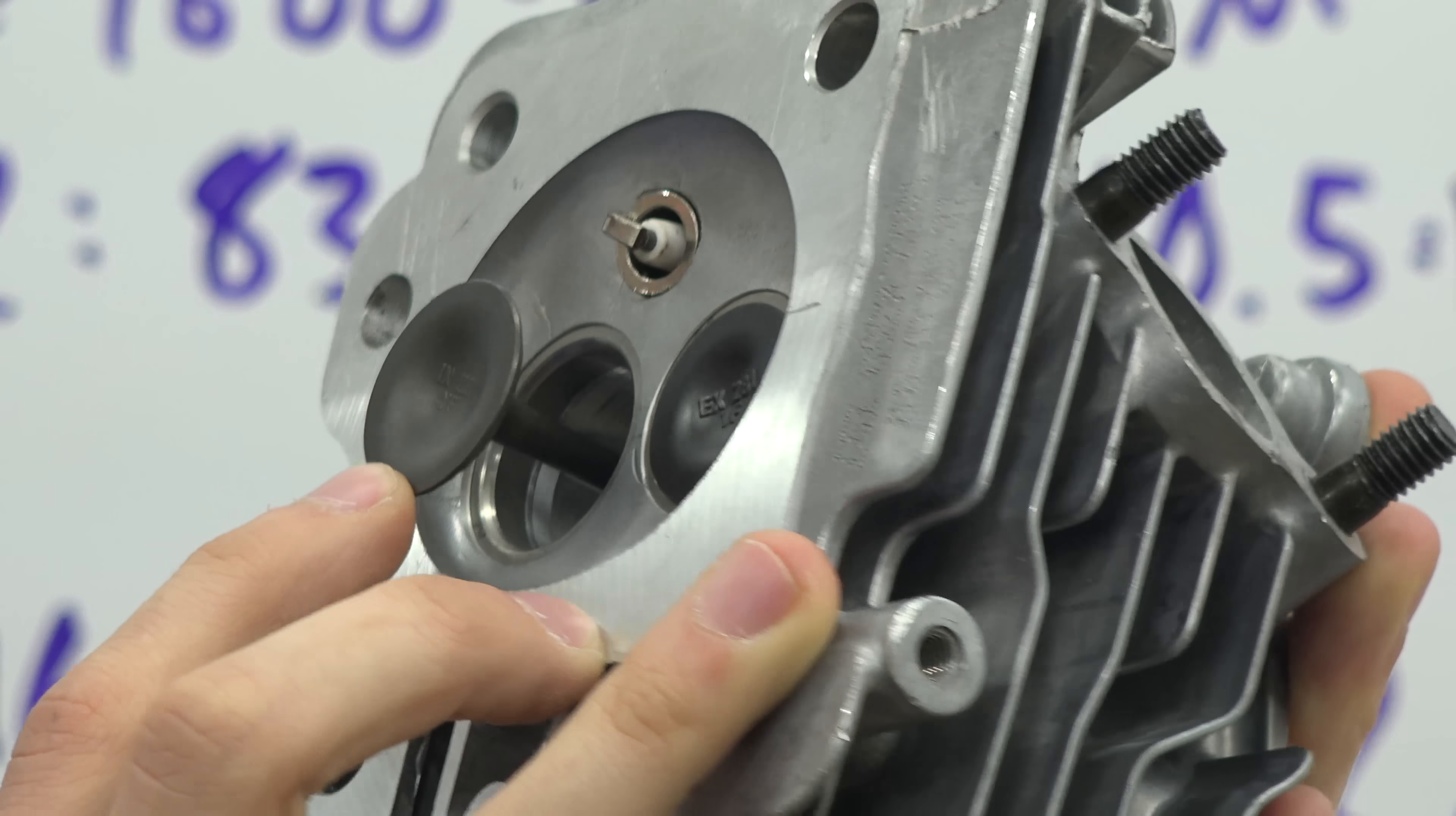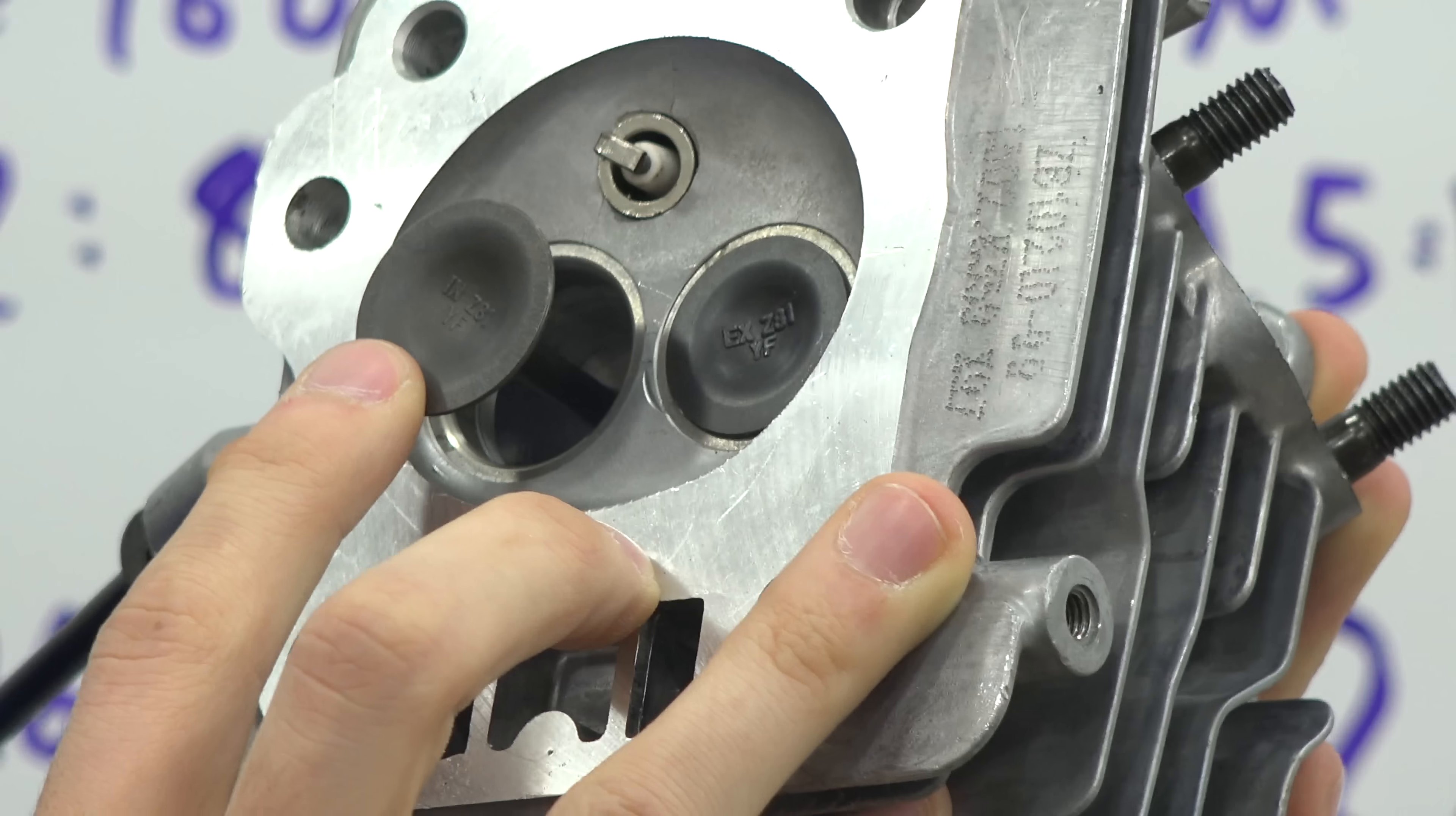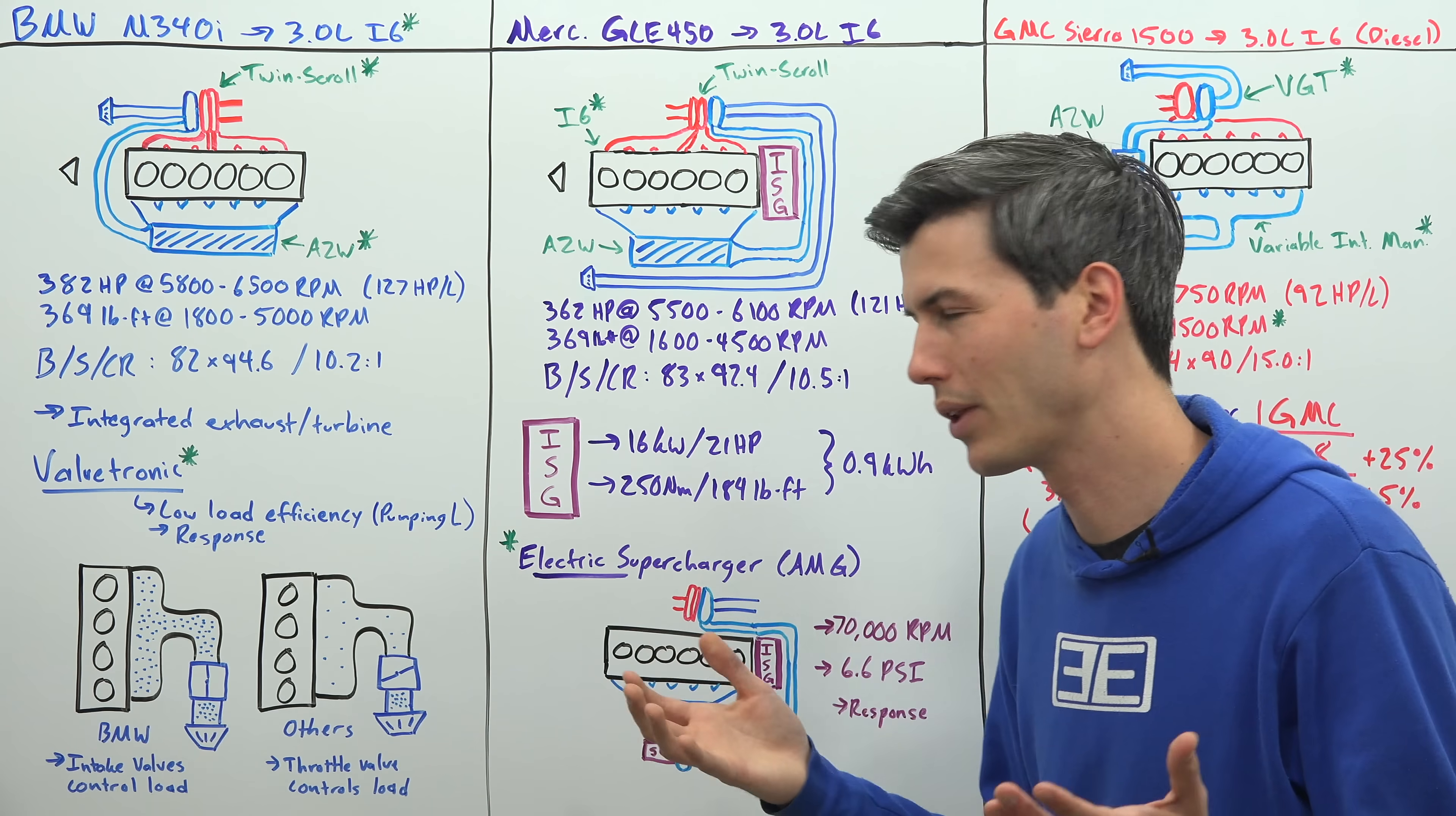The more you open that intake valve, obviously I'm exaggerating things here a bit, but the more you open that intake valve the more power you're going to make. And if you reduce how much that intake valve is open, the less power you will make. So why does BMW do this?